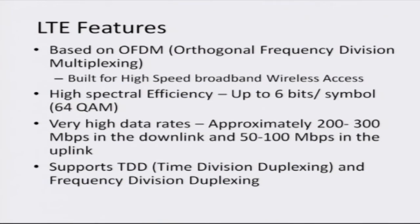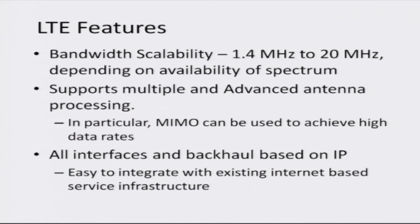LTE, similar to WiMAX, is based on the powerful OFDM — orthogonal frequency division multiplexing — radio signal transmission technology and is built for high-speed broadband wireless access. It has very high spectral efficiency, supporting up to 6 bits per symbol, with data rates of about 200 to 300 megabits per second in the downlink and 50 to 100 megabits per second in the uplink. It supports both time division duplexing and frequency division duplexing, and a bandwidth of about 20 megahertz.